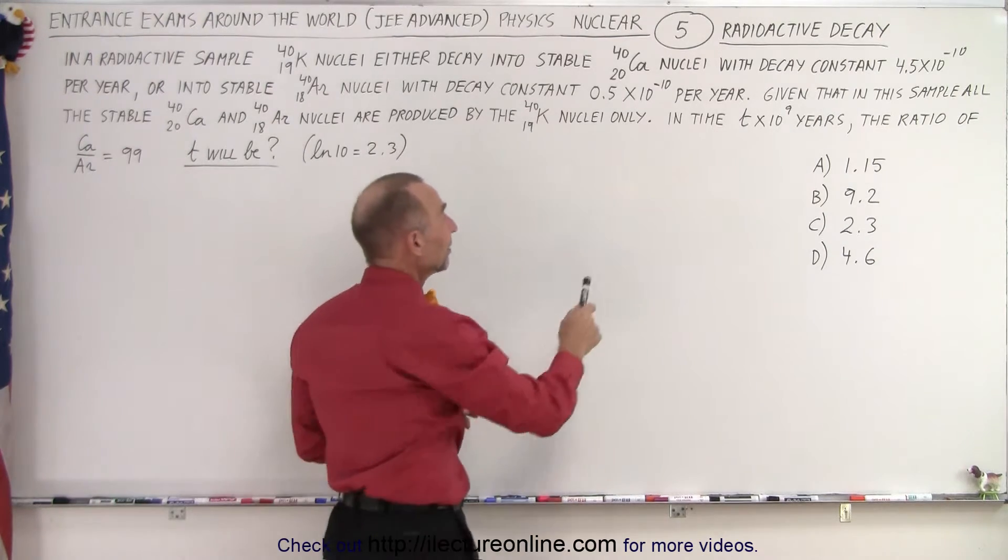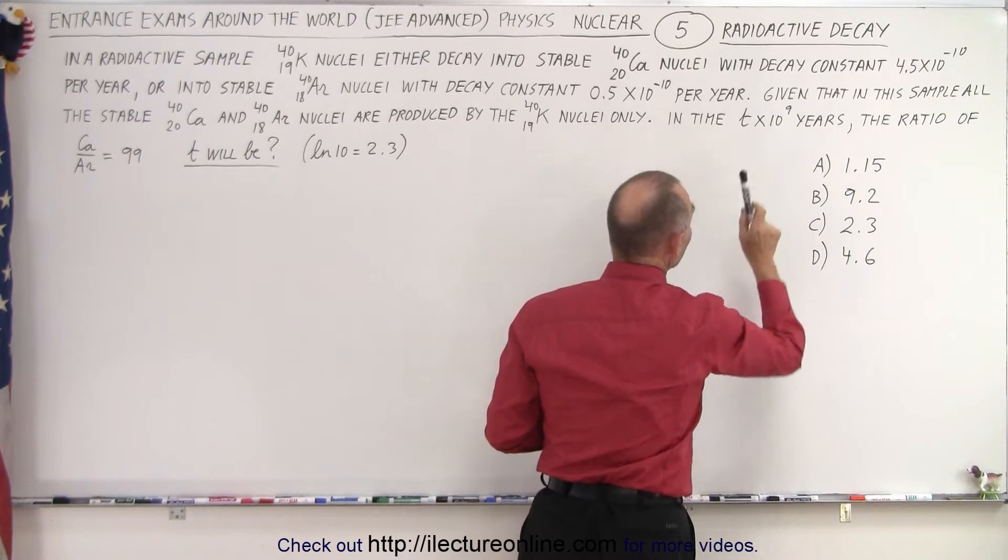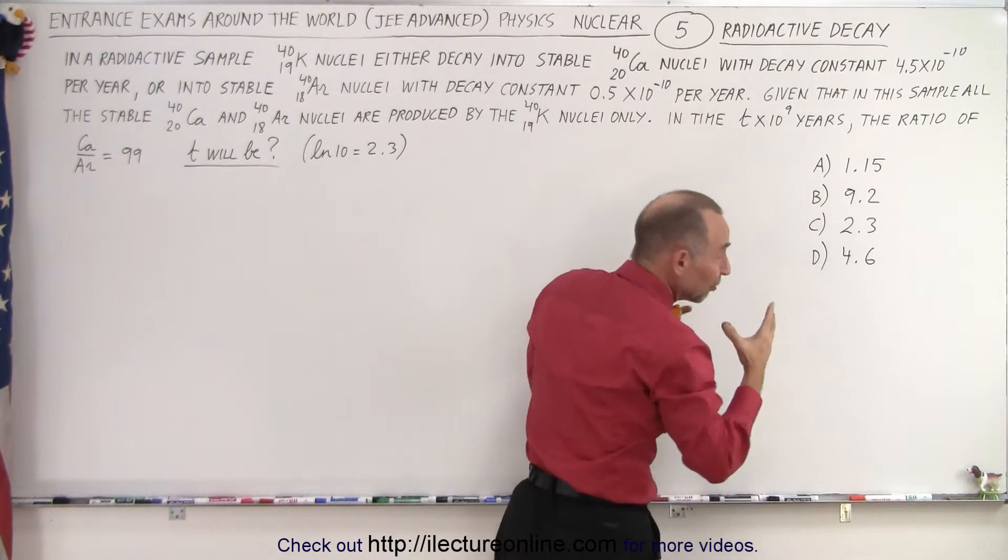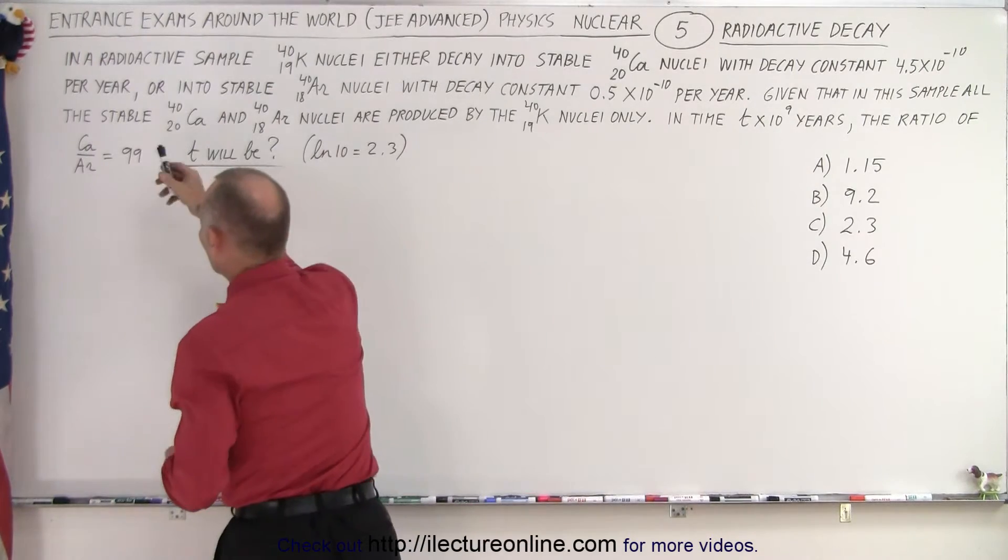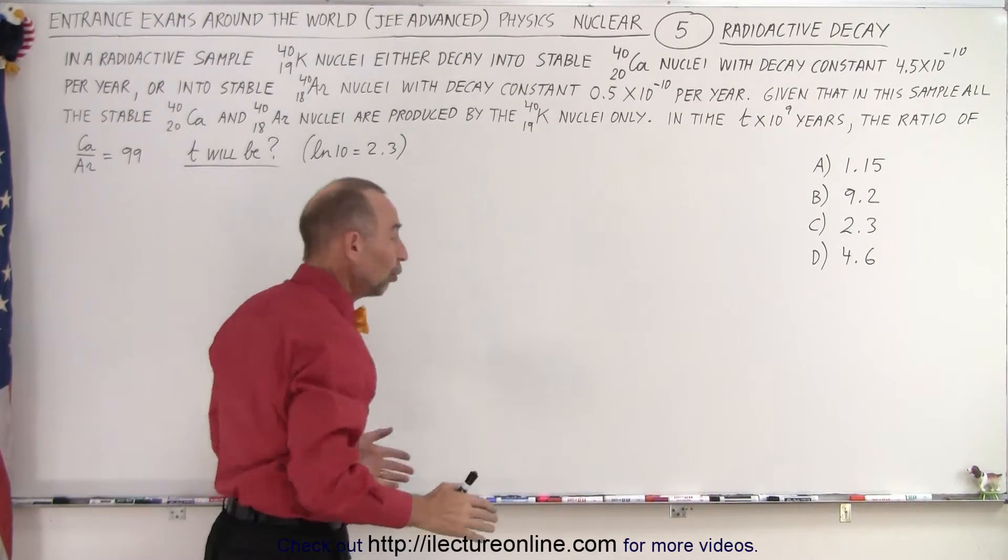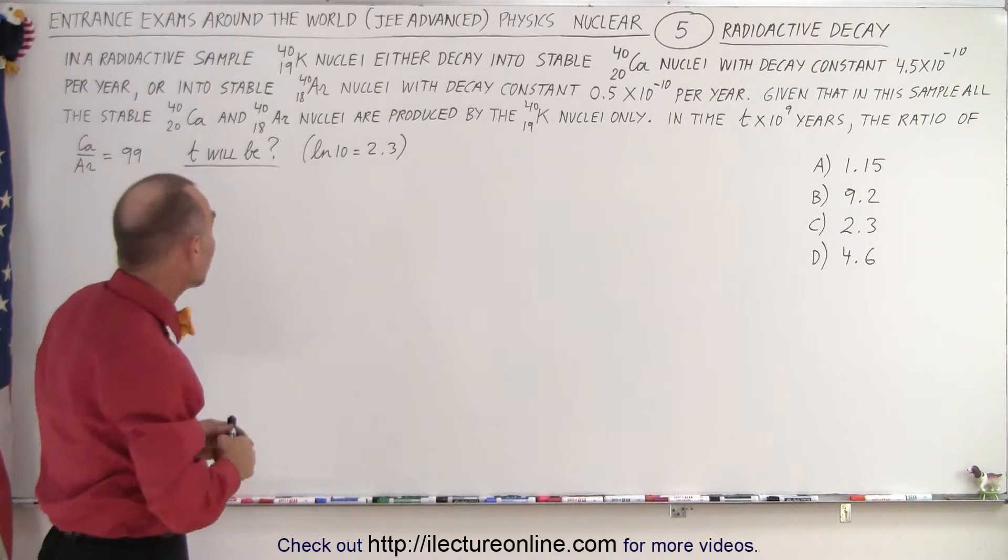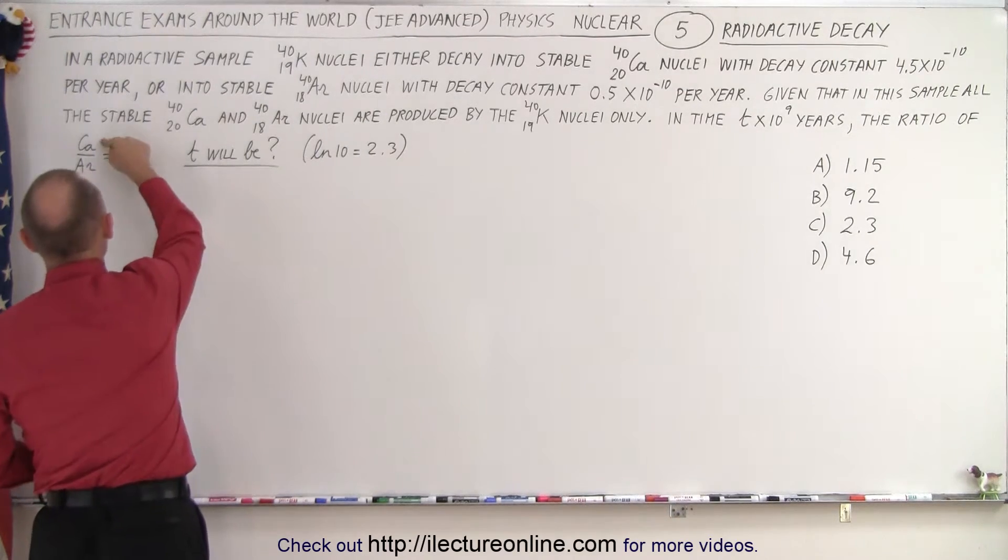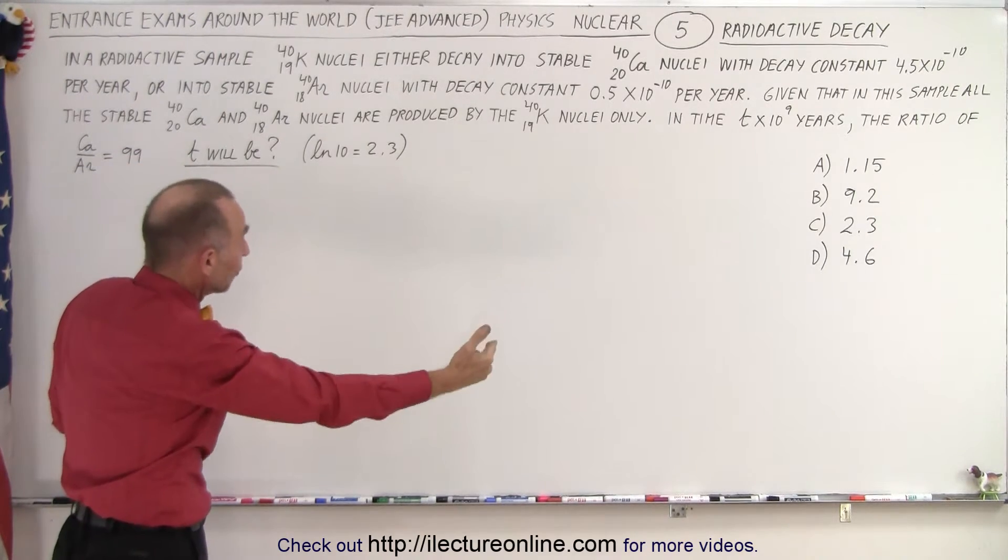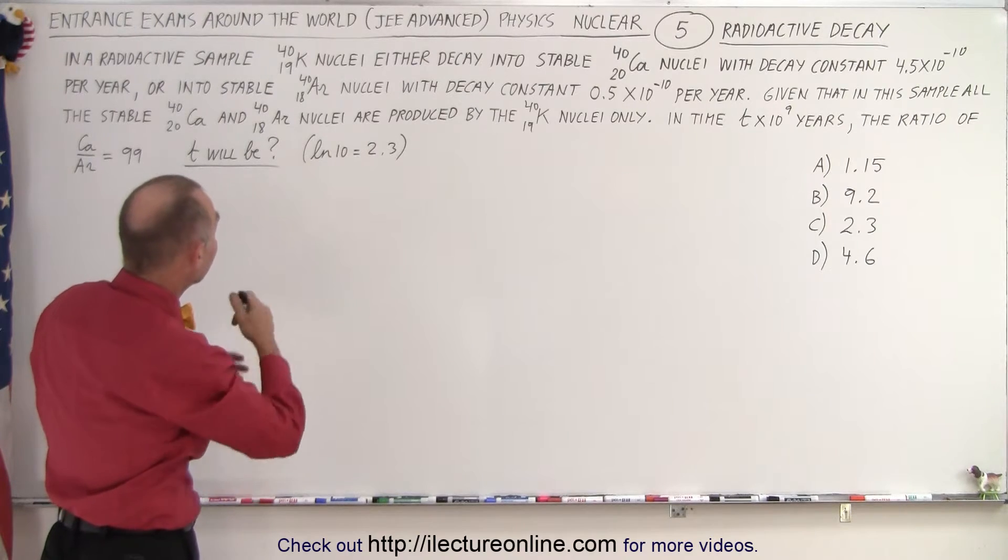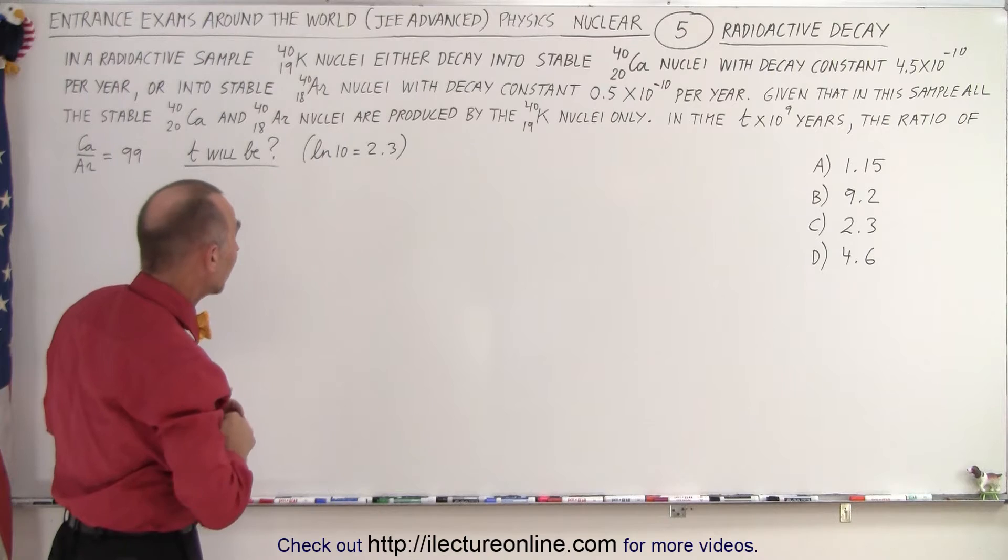Now they tell us that in time t times 10 to the ninth years, so this is in billions of years, after so many billions of years, the ratio of calcium to argon will be 99. So what is t equal to? How many billions of years will it be before the ratio between calcium and argon will be 99? Realizing that of course much more calcium will be developed in that decay process because it has a much larger decay constant.